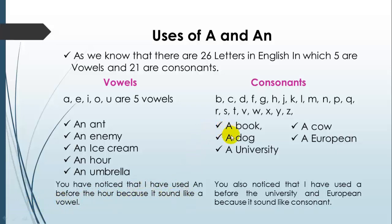Examples of consonants: a book, a cow, a dog, a European, a university. You also noticed that I have used a before university and a European because they sound like consonants.